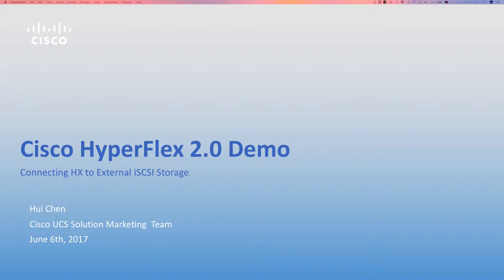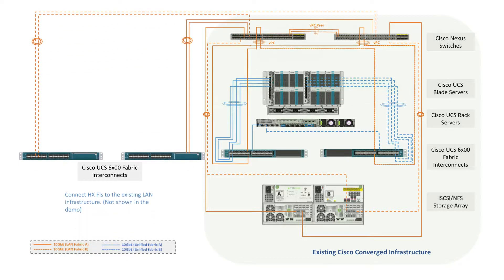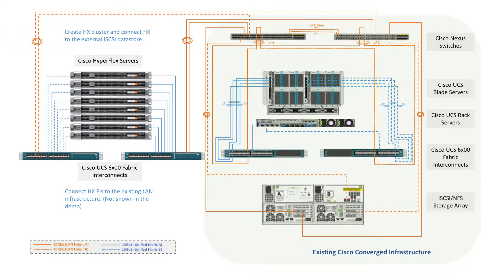This demo will show how to connect a Cisco HyperFlex cluster to external iSCSI storage. We look at an environment with existing Cisco converged infrastructure. To connect HX to the iSCSI storage devices in that environment, first connect HX FIs to the existing LAN infrastructure, then create the HX cluster and connect HX to the external iSCSI data store.